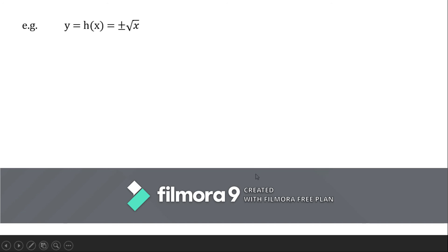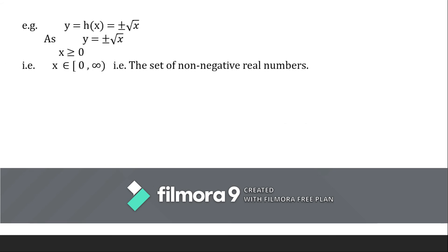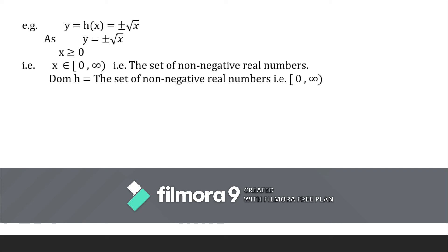Consider the second example: Y = H(X) = ±√X. Here Y is related to ±√X. We see that X, the subject under the square root, cannot be negative. So X must be greater than or equal to 0, meaning X belongs to [0, ∞), the set of non-negative real numbers. Thus the domain of this relation is the set of non-negative real numbers, that is [0, ∞).